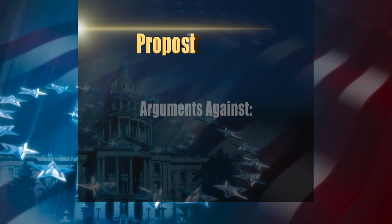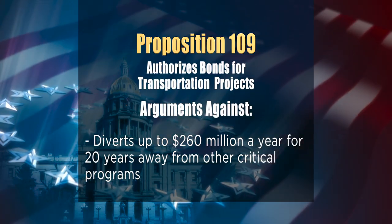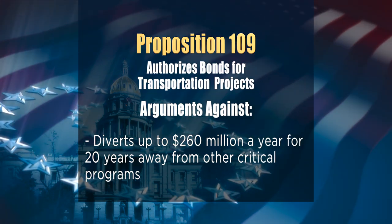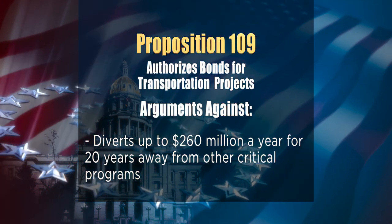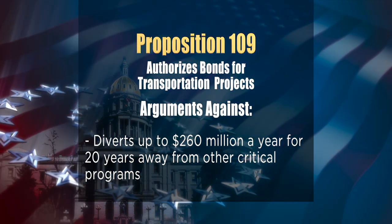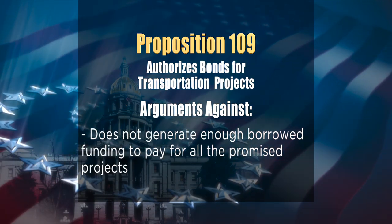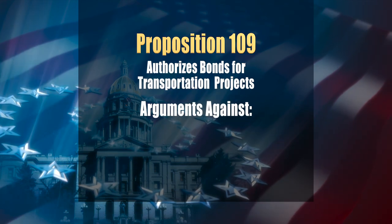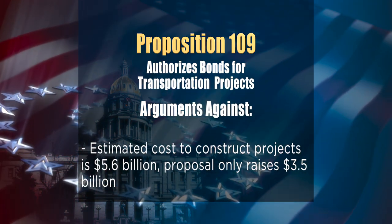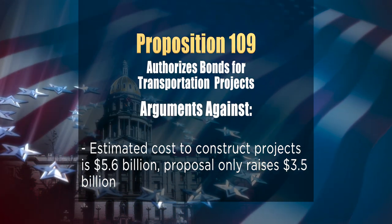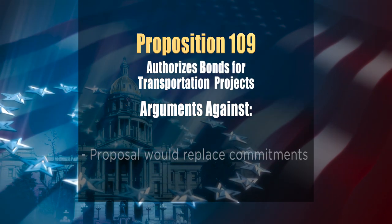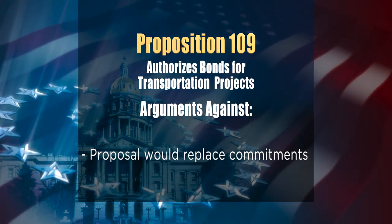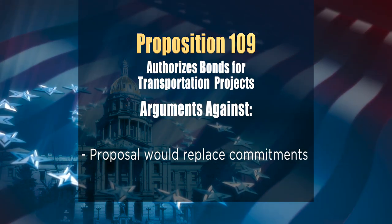Those opposed to Proposition 109 say requiring bonds to be repaid with existing state revenue will divert up to $260 million a year for 20 years away from other critical programs, including education, health care, public safety, and routine transportation maintenance. The measure does not generate enough funding to pay for all promised projects — the estimated cost is $5.6 billion but the proposal only raises $3.5 billion. Additionally, the borrowed money may only be used for projects listed in the proposal, and it would replace financial commitments made by the General Assembly and the Governor in the 2018 legislative session.